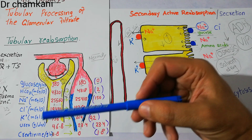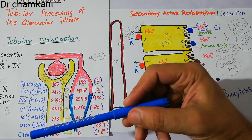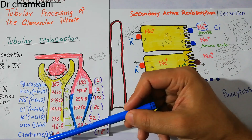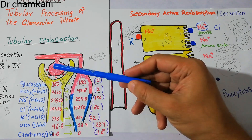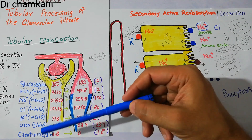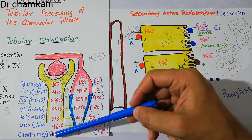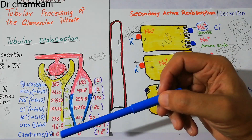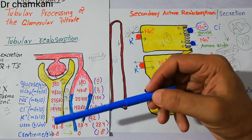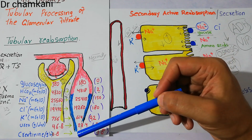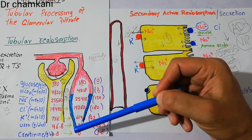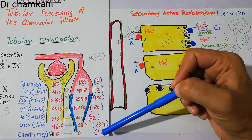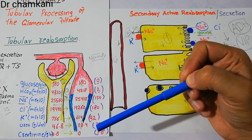Finally, if we talk about the reabsorption of creatinine: 1.8 grams of creatinine is filtered per day. Out of the 1.8 grams of creatinine filtered per day, 0 creatinine is reabsorbed into the peritubular capillaries and almost 100% is excreted in urine.